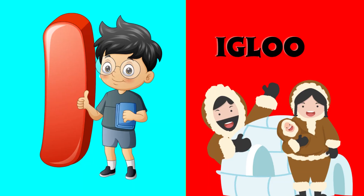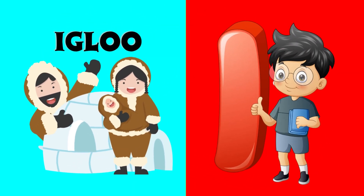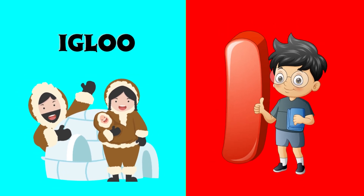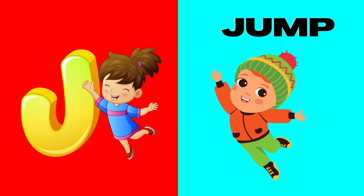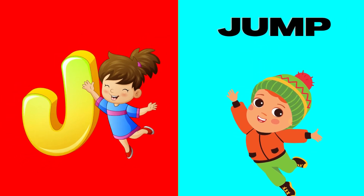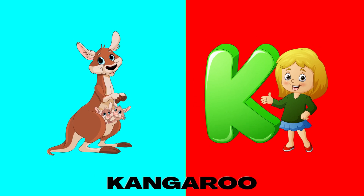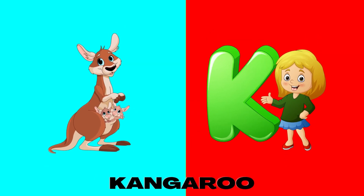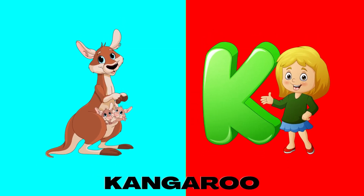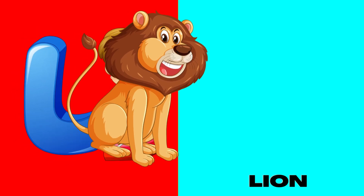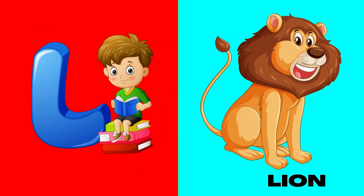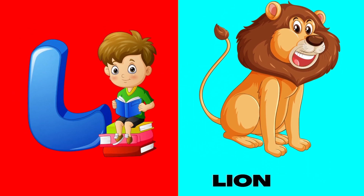I is for igloo, i-i-igloo. J is for jump, j-j-jump. K is for kangaroo, k-k-kangaroo. L is for lion, l-l-lion.